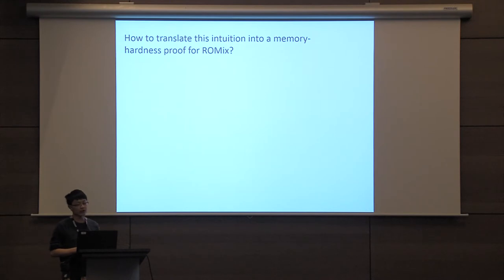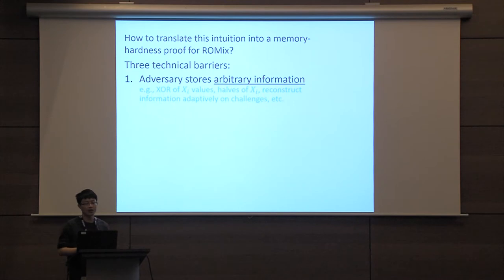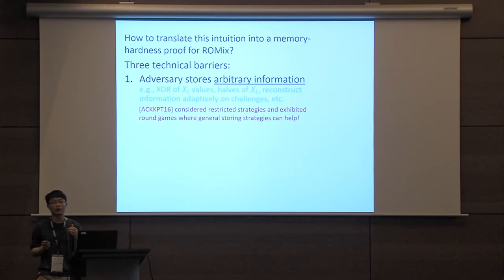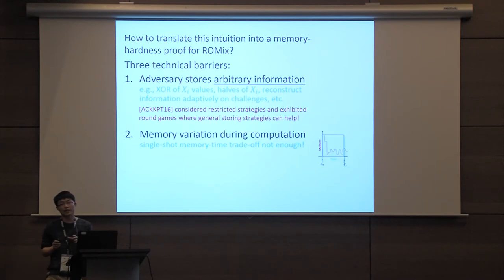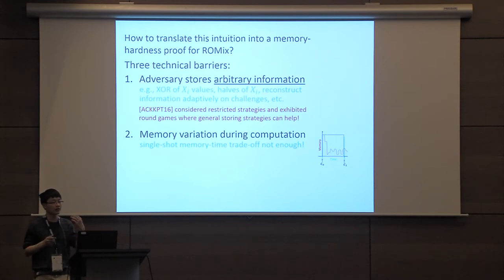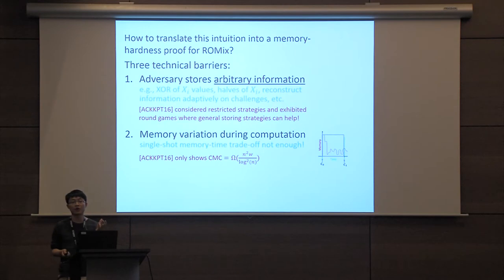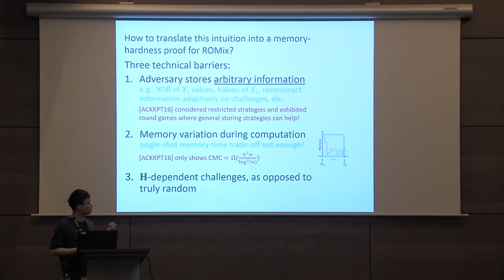Unfortunately, to translate this intuition into a memory hardness proof for RawMix we face three technical barriers. First, the adversary might store arbitrary information — for example XOR of x_i values — and this is not hypothetical: prior work at EuroCrypt 2016 showed that in some round games, general strategies can actually help, and previous proofs only considered restricted strategies. Second, the single-shot memory-time trade-off only gives a memory lower bound at a single step, which is not enough to lower bound the CMC, as a general strategy can vary its memory consumption a lot. Third, in RawMix the challenges Cj are oracle-dependent rather than truly random and independent.